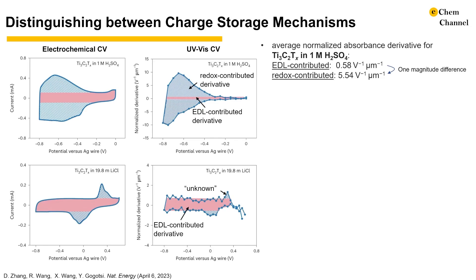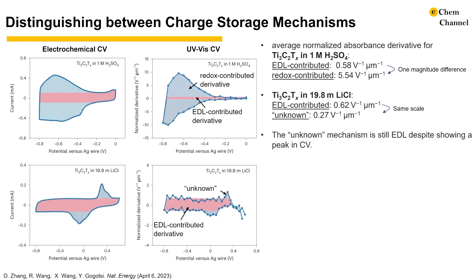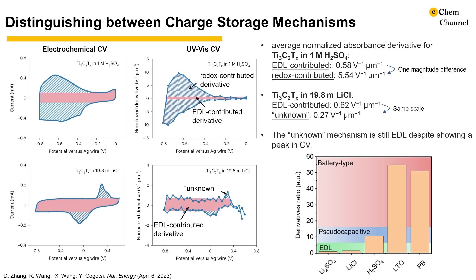We can take the potential range of the double-layer contributed region — say, negative 0.2 to 0 volts — and calculate the average absorbance derivative from the same range in the UV-Vis CV, giving 0.58 inverse volt inverse micrometer. The ratio between the UV-Vis absorbance derivative of the redox and EDL contributions is close to 10, indicating significant charge transfer contributions. We can apply this method to the anomalous case of Ti3C2 MXene in saturated lithium chloride electrolyte, where peaks are present in electrochemical CVs yet the mechanism is electrostatic double-layer. The average absorbance derivative of the EDL-contributed and the unknown regions are of the same magnitude, supporting the hypothesis that the unknown reaction is double-layer despite showing a peak in the CV. We calculated all the absorbance derivative ratios for all systems and found that double-layer, pseudocapacitive, and battery-type mechanisms show ratios close to 1, 10, and 50, respectively.